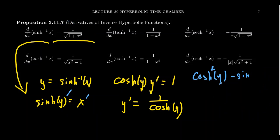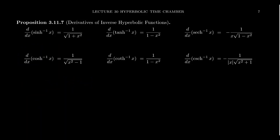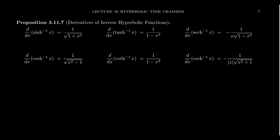The derivative of arc cosh, that is the inverse of cosh, by a similar argument, is going to be 1 over the square root of x squared minus 1. There is a difference of sign there that comes about because of the sign change between sinh and cosh. If we wanted to, we could calculate the derivative of the inverse of hyperbolic tangent. That's going to be 1 over 1 minus x squared.